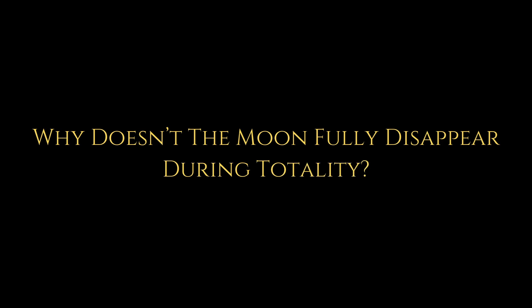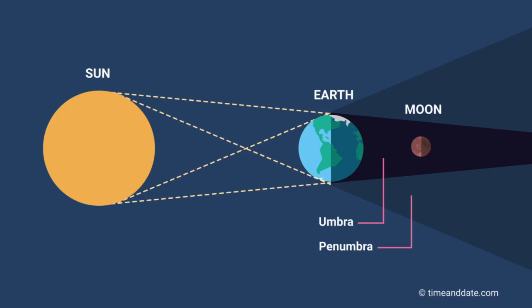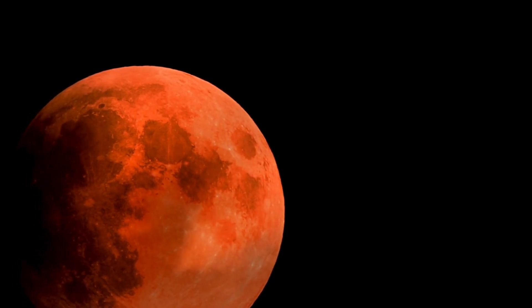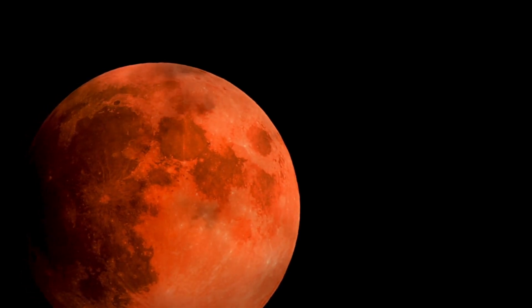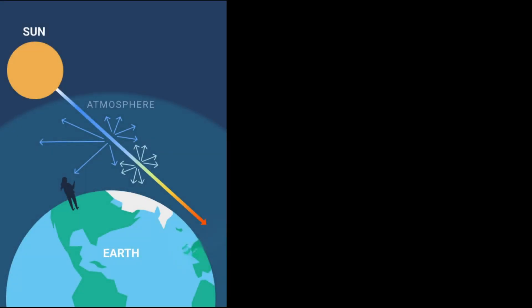A natural question arises: why doesn't the Moon just fully disappear during a total eclipse? It's, after all, deep inside the dark, umbral shadow of the Earth. Instead, it glows a deep coppery red. Now, this happens because some sunlight bends or refracts through the Earth's atmosphere.